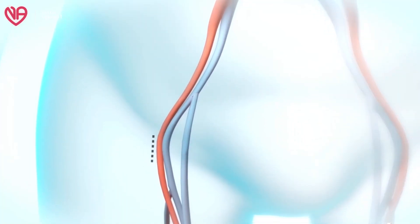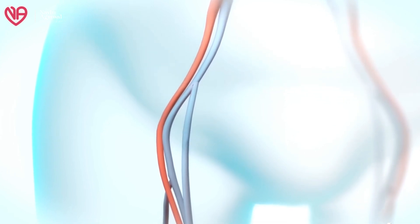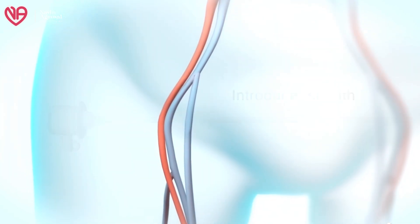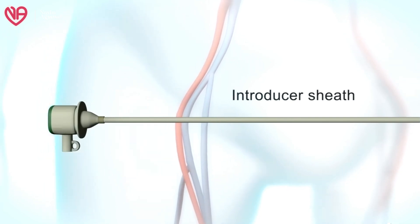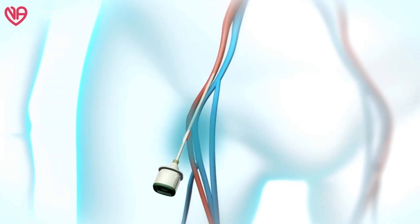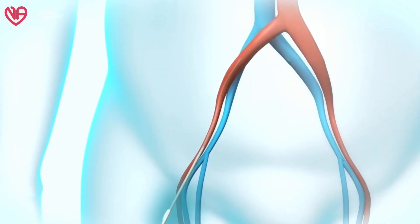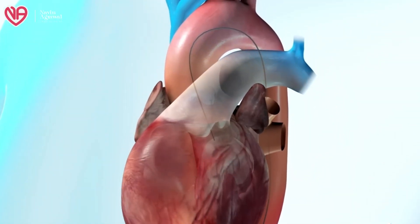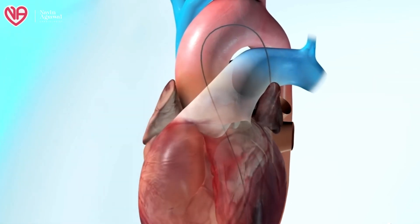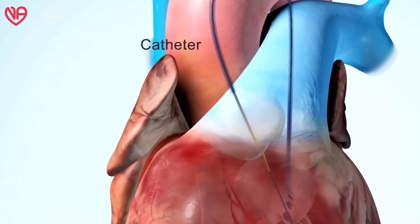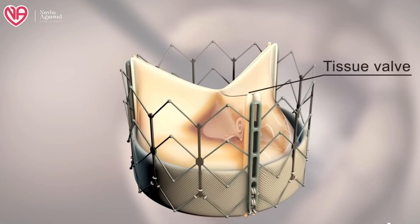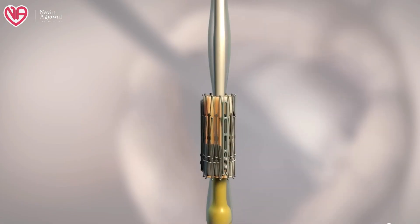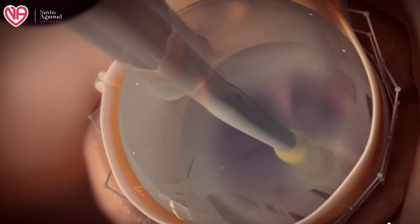The procedure is usually done under general anesthesia or sometimes with conscious sedation. Usually the femoral artery is used as the access site, which is the large artery present on the anterior part of the thigh. A small incision is made into this artery and over this we pass the catheter, which is brought to the position of the aortic valve under fluoroscopy or radiographic guidance. Once the valve is found at an appropriate position, the position is confirmed and the valve is delivered.